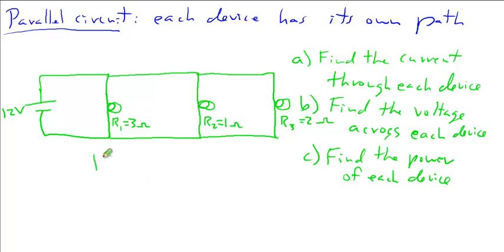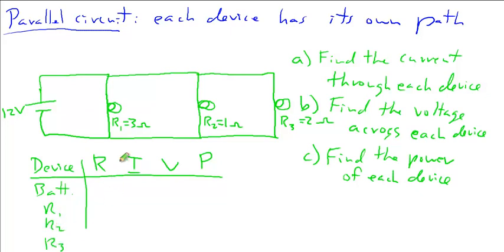To do this, we're going to make an RIVP table. The first column is device. We have our battery, R1, R2, and R3. The battery, we'll put not applicable for resistance. We know it's a 12 volt battery. R1 is 3 ohms, R2 is 1 ohm, and R3 is 2 ohms.